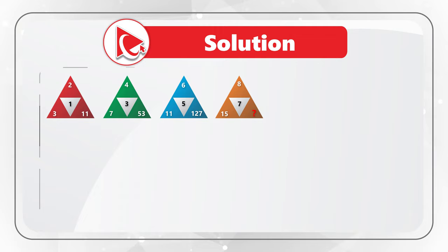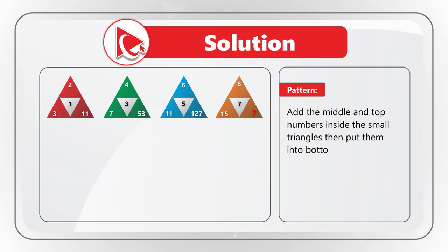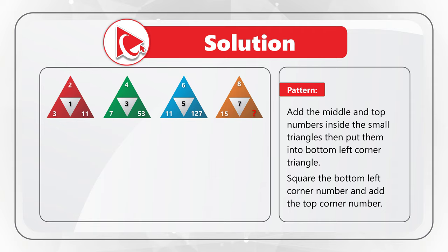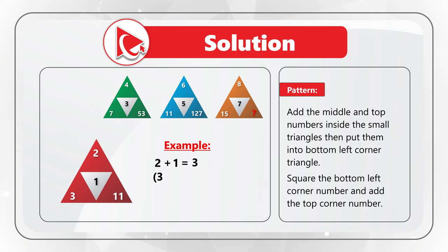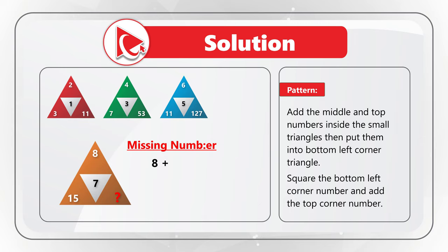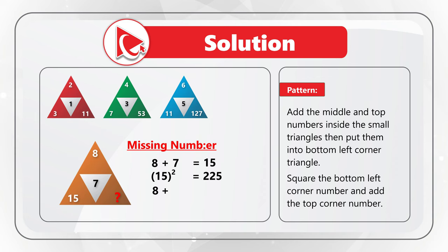Let's look at the first triangle as an example. 2 plus 1 equals 3; 3 squared equals 9; and 9 plus 2 equals 11. Armed with this information, let's find the missing number. First, let's add 8 plus 7, the top and the middle numbers: 8 plus 7 equals 15. And you can confirm this by looking at 15 in the bottom left corner of the triangle. 15 squared equals 225. Then to find the missing number, we need to add 8, which is the number at the top of the triangle, plus 225, which is the calculated number.